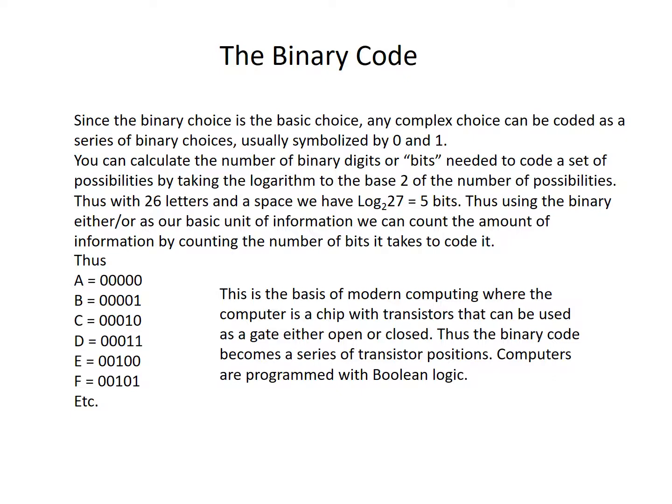Thus, A equals 00000, B equals 00001, C equals 000010, and so on. This is the basis of modern computing, where the computer is a chip with transistors that can be used as a gate — either open or closed. Thus, the binary code becomes a series of transistor positions. Computers are programmed with Boolean logic.